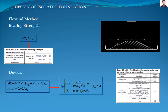Now we verify the nominal bearing strength with the equation from table 22.8.3.2 of the ACI 318 standard, where Vn is the nominal bearing strength, Vu is the load transmitted from columns, phi is the reduction factor of 0.65 according to table 21.2.1 of the ACI 318 standard, A1 is the load area, and A2 is the area of the lower base projected from A1 with a slope of 2 to 1, as illustrated in figure R22.8.3.2 of the ACI 318 standard.